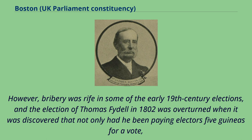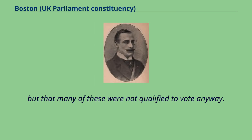However, bribery was rife in some of the early 19th century elections, and the election of Thomas Fidel in 1802 was overturned when it was discovered that not only had he been paying electors five guineas for a vote, but that many of these were not qualified to vote anyway.